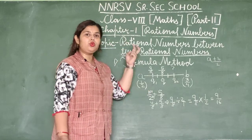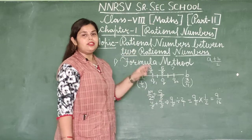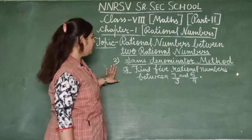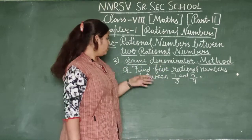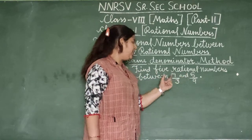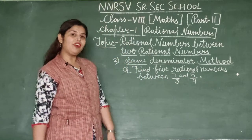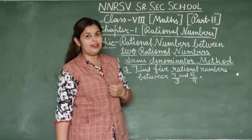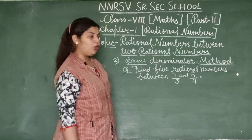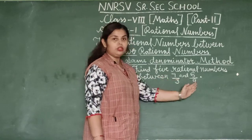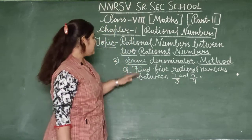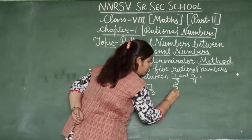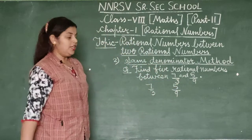To summarize the formula method: given two numbers, we add both numbers and divide by 2 to get a number between them. Now let us look at the second method — the same denominator method. The question is: find 5 rational numbers between 7/3 and 5/9. First, we make the denominators the same.